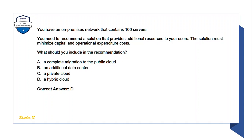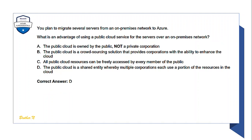Question: You have an on-premises network with 100 servers. You need to recommend a solution that provides additional resources to users while minimizing both capital and operational expenditure costs. The answer is A: hybrid cloud. For the follow-up question on the advantage of using a public cloud over on-premises, the answer is D: the public cloud is a shared entity where multiple corporations each use a portion of the resources.